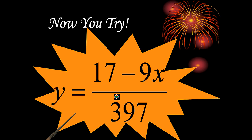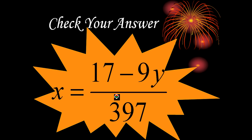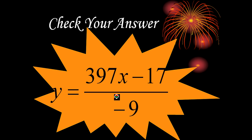And then, after trying, if you got the answer y equals 397x minus 17 over negative 9, then you are correct.